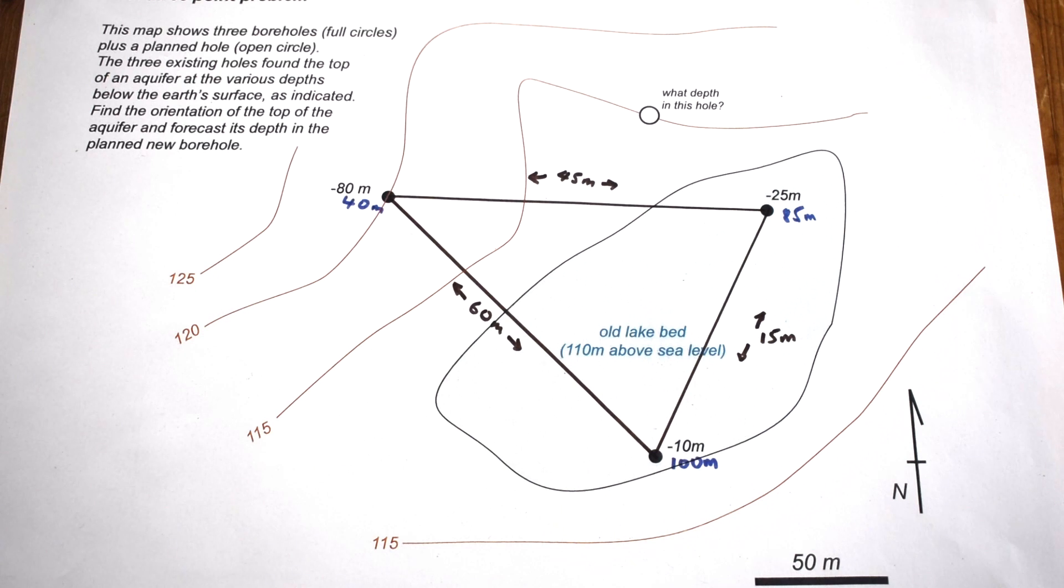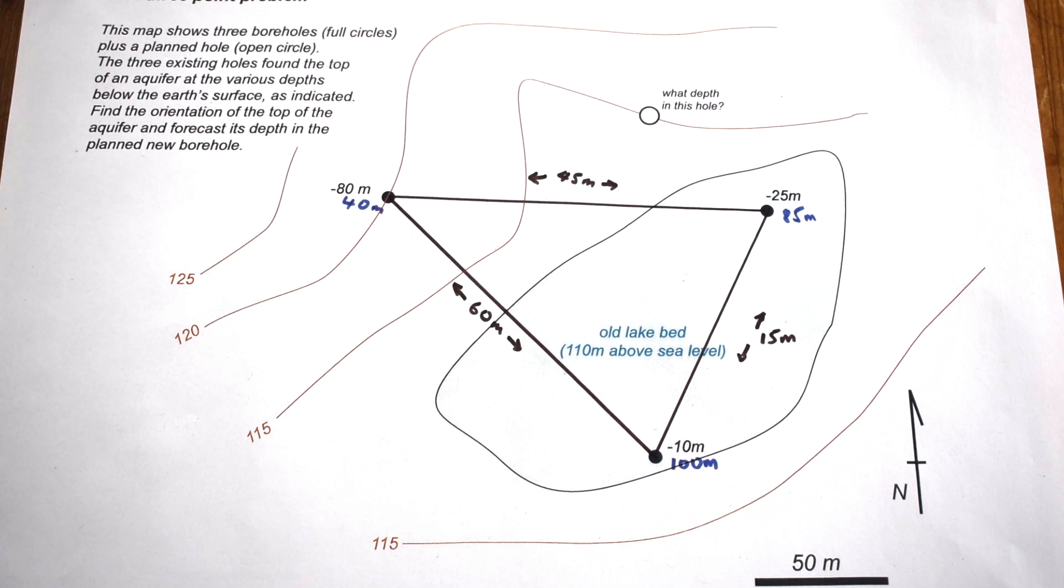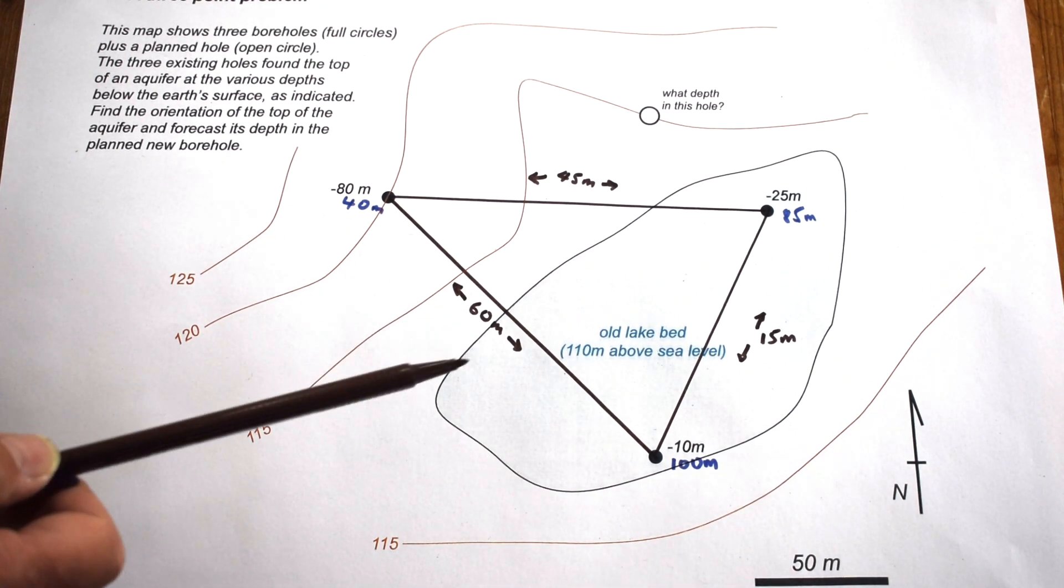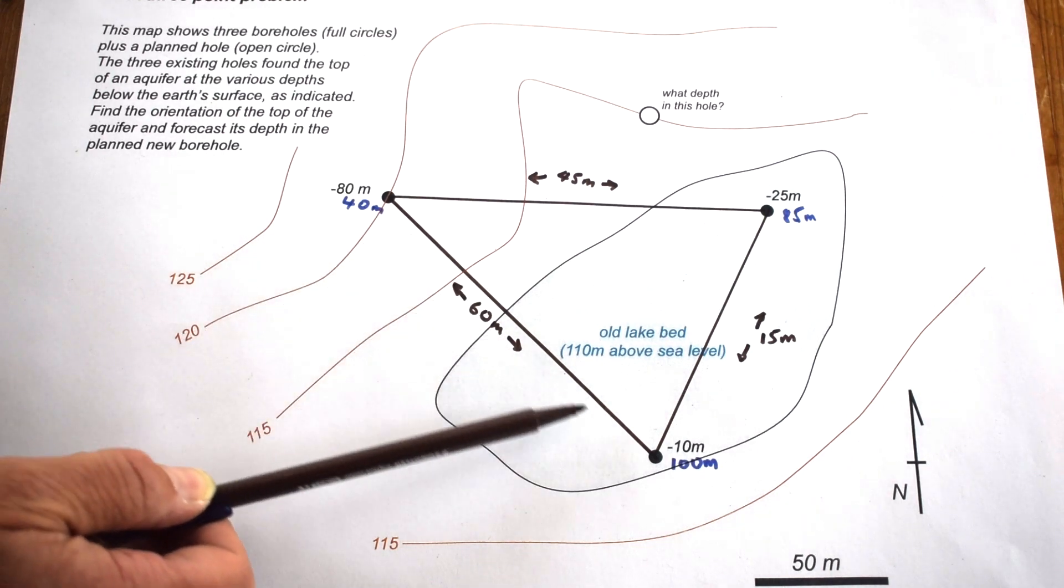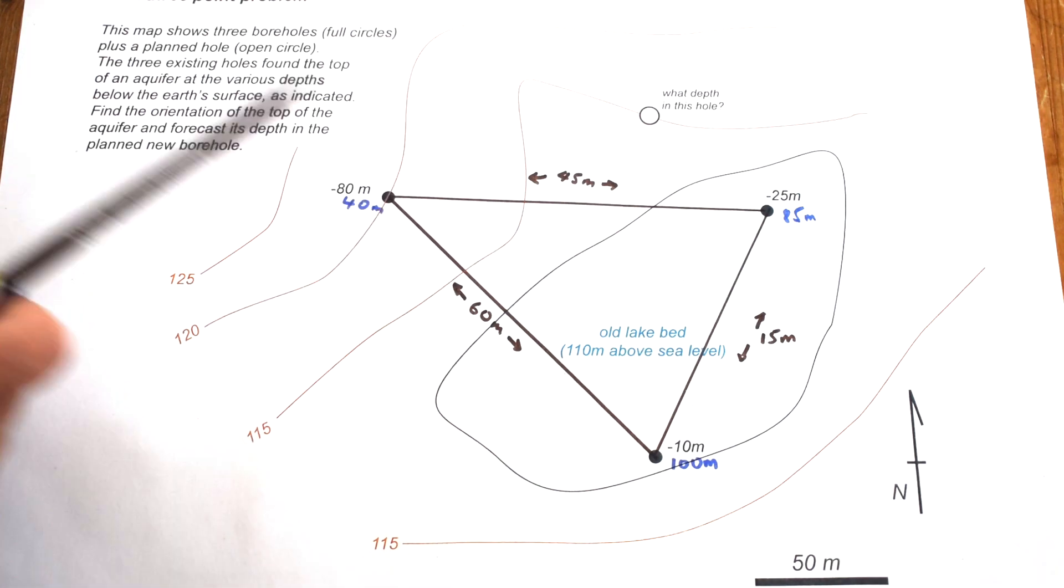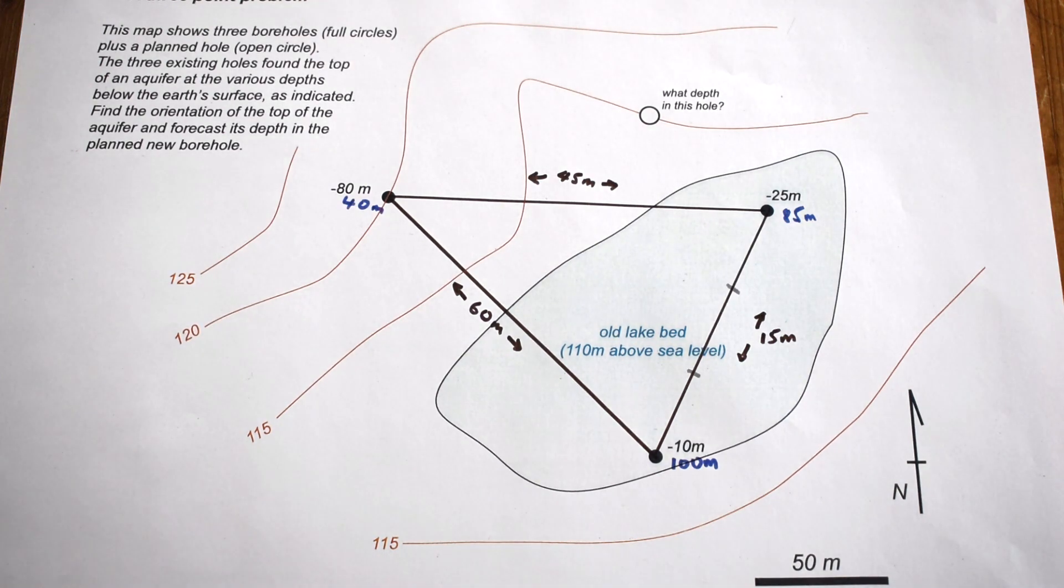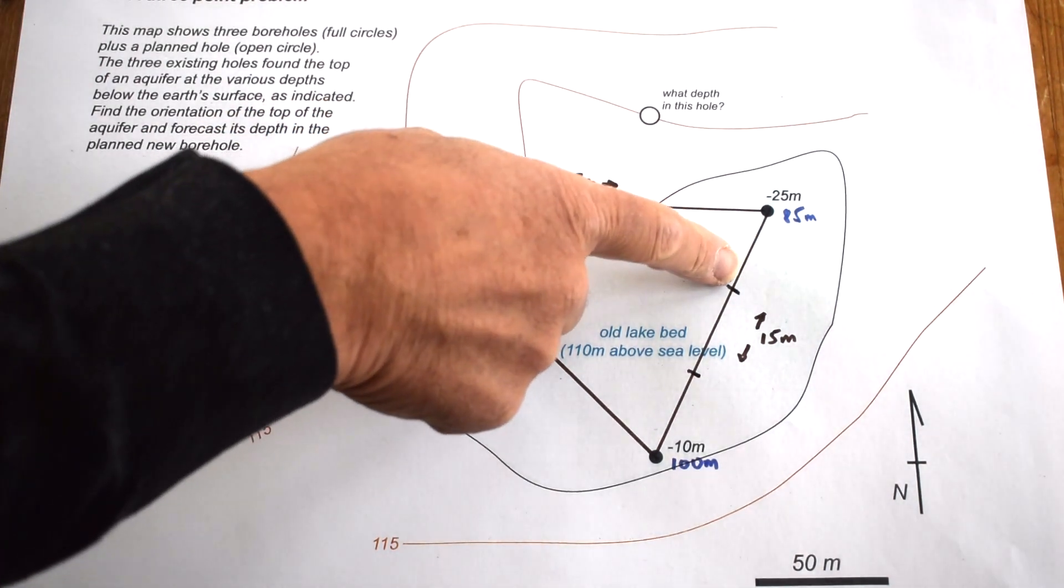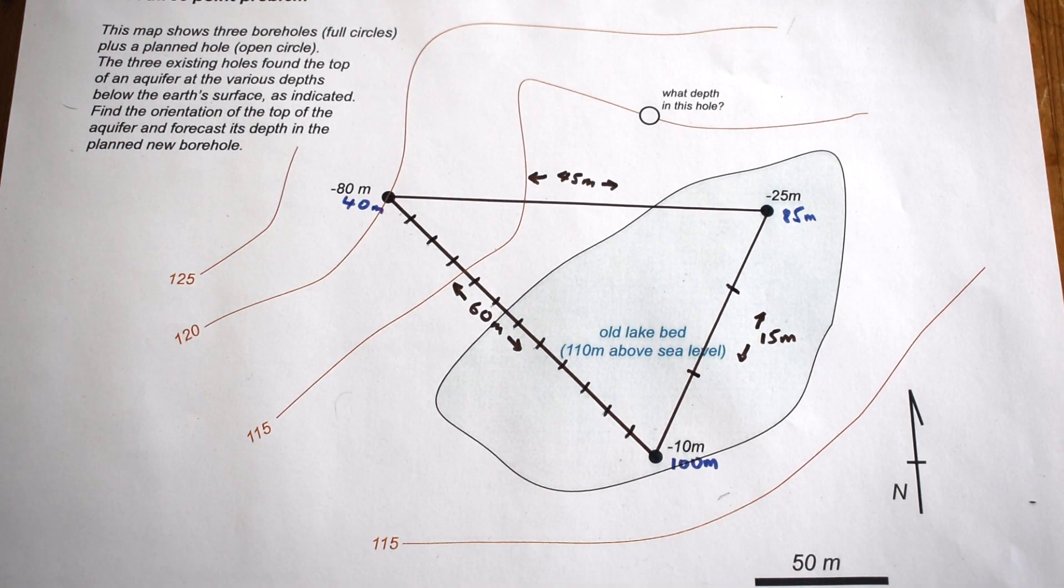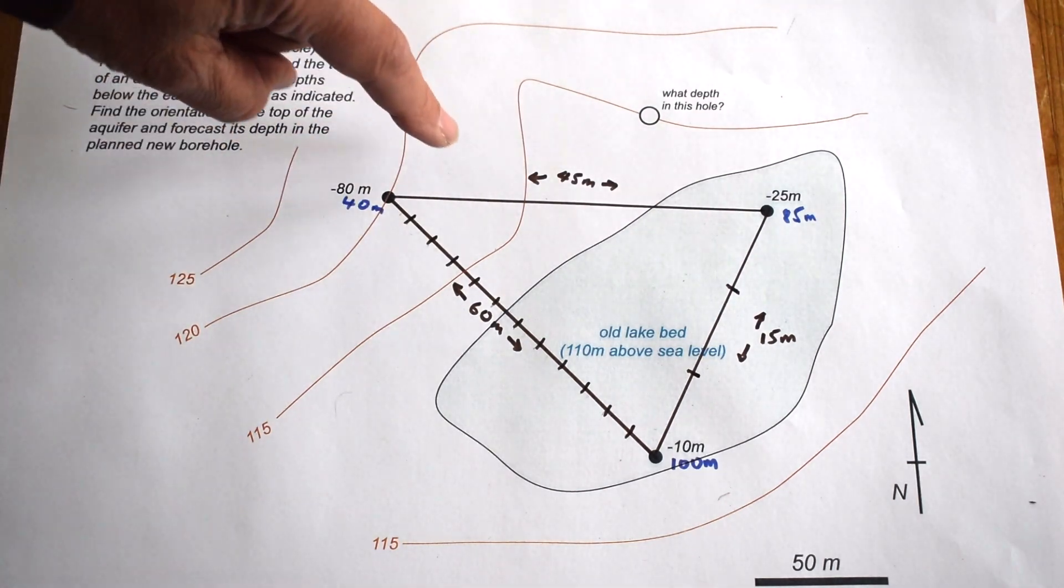Now we need to divide these sides into regular spacings. I'm going to use five meter spacings because these are the same as in the topographic contours. Pretty clearly then, we're going to have 12 five meter intervals along here, three along here, and nine along here. So we're going to divide our triangle edges up in those proportions.